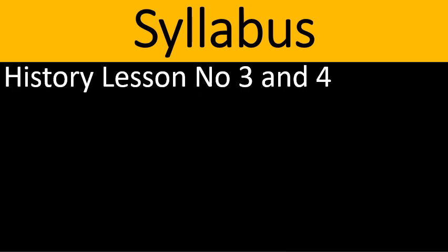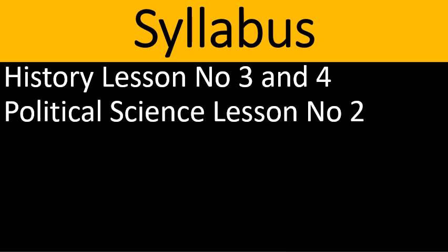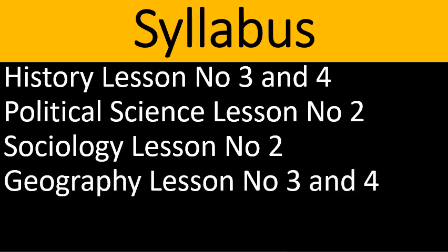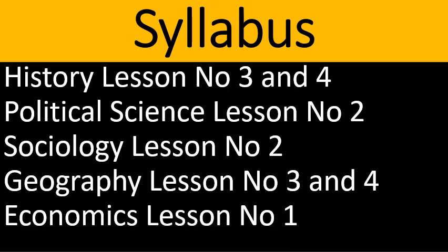Let us know the syllabus. History: Lesson Number 3 and 4. Political Science: Lesson Number 2. Sociology: Lesson Number 2. Geography: Lesson Number 3 and 4. Economics: Lesson Number 1. History lessons 3 and 4 cover the impact of British rule in India and opposition to British rule in Karnataka, and the Wadiyars of Mysore. Political Science Lesson 2 covers India's relationship with other countries. Sociology Lesson 2 covers work and economic life. Geography covers India's soils and forest resources. Economics Lesson 1 covers government and economy.